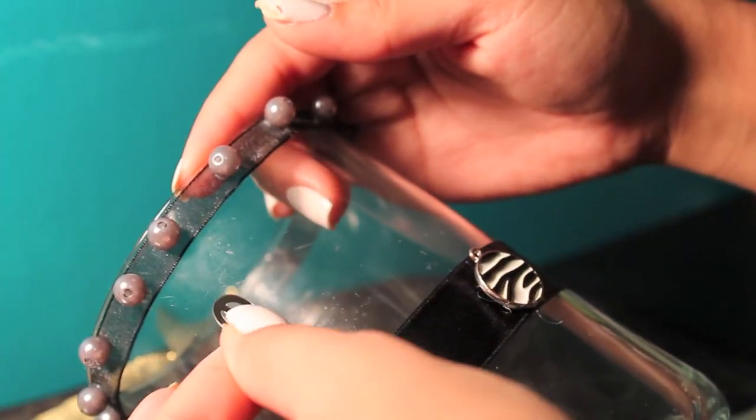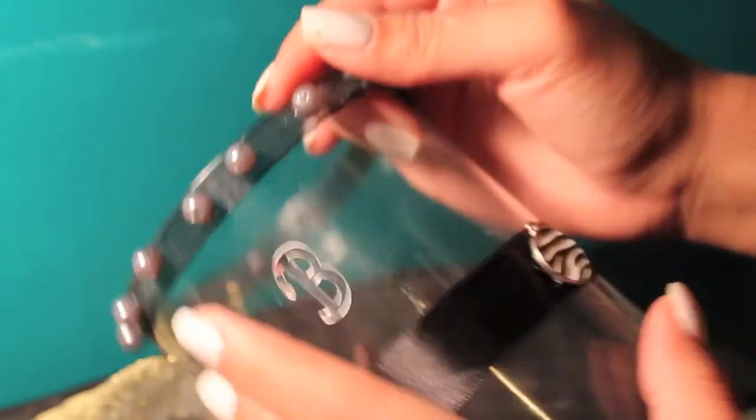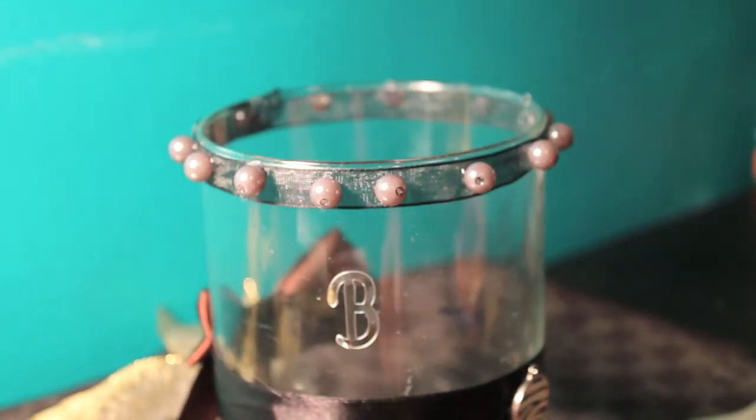And now you just apply the stickers. Since I got the alphabet stickers, I'm just going to write something that represents me all around the vase.